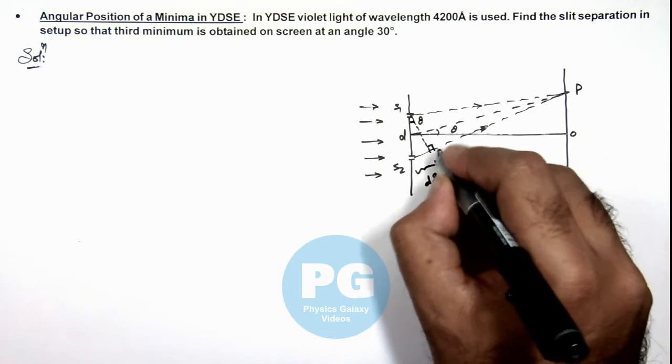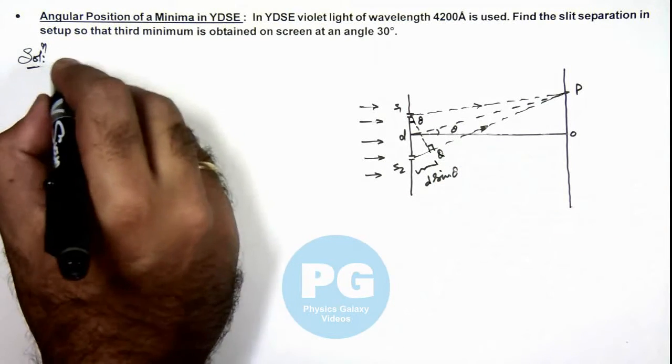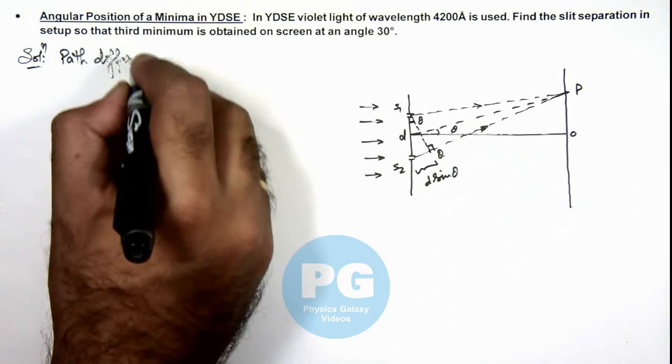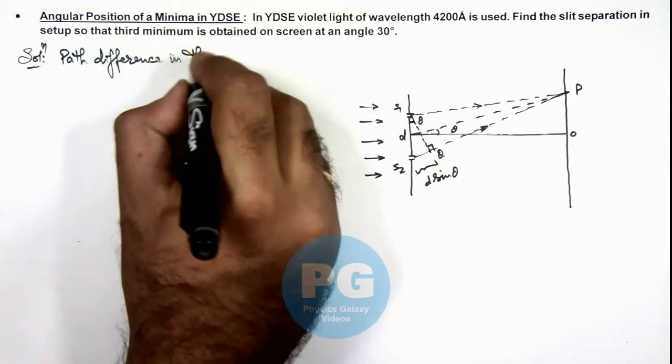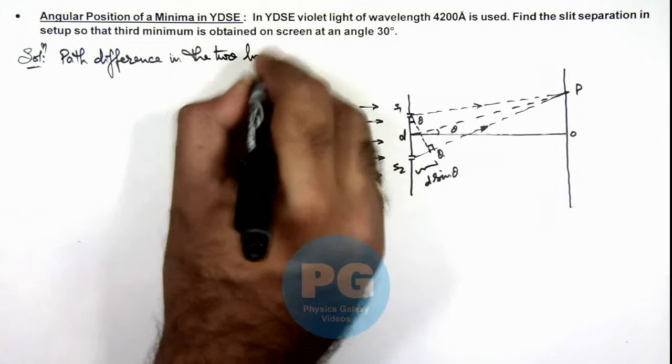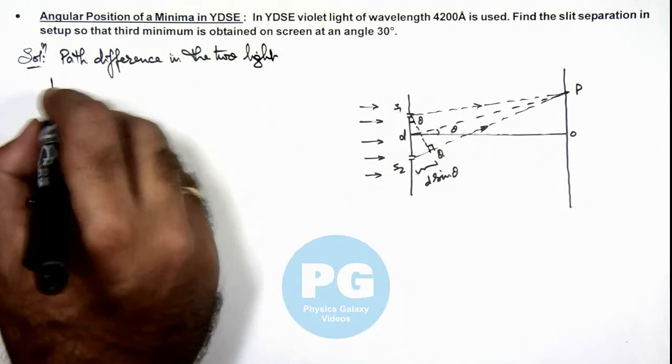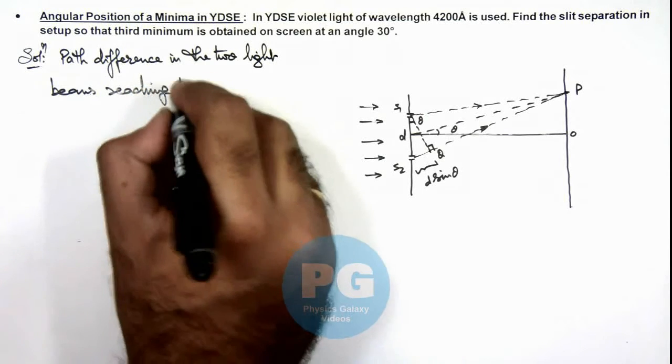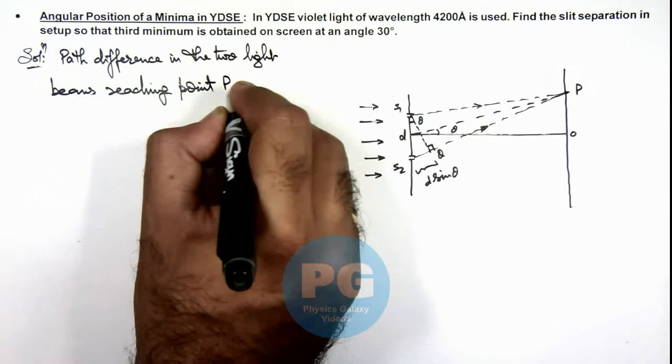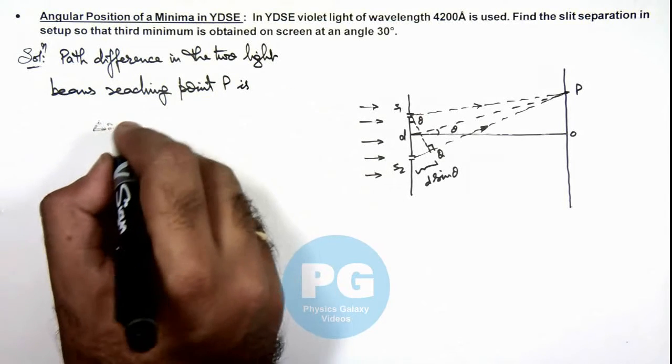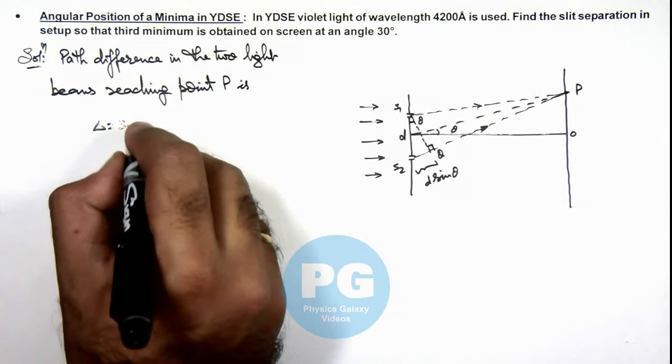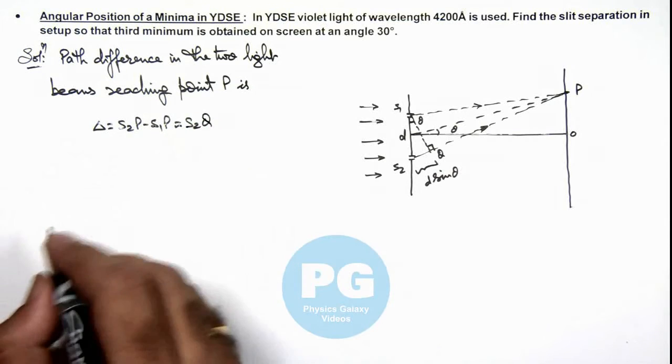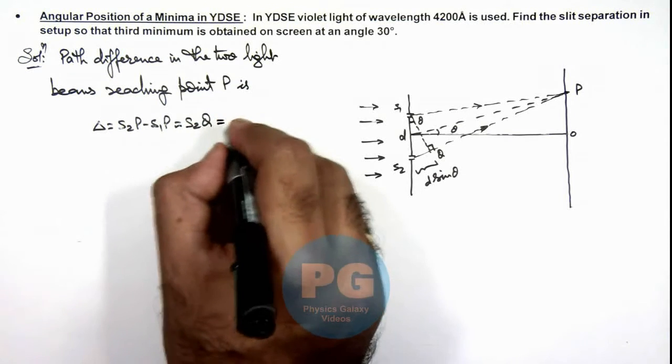If this point is Q, here we can write the path difference in the two light beams reaching point P. This path difference we can write as S2P minus S1P, that is approximately equal to S2Q, and the value is equal to d sine theta.